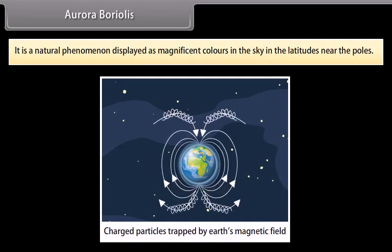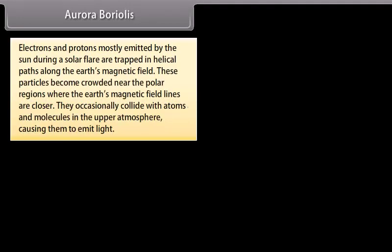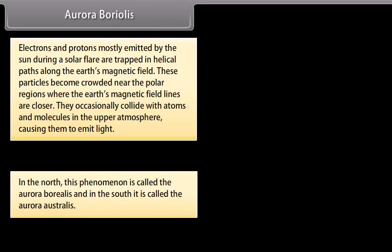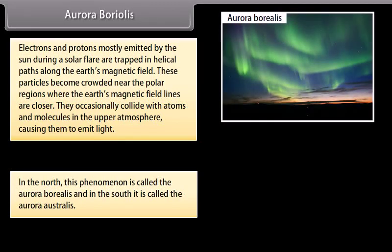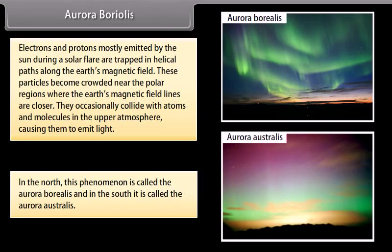Aurora Borealis. It is a natural phenomenon displayed as magnificent colors in the sky at latitudes near the poles. Electrons and protons mostly emitted by the sun during a solar flare are trapped in helical paths along the earth's magnetic field. These particles become crowded near the polar regions where the earth's magnetic field lines are closer, and occasionally collide with atoms and molecules in the upper atmosphere causing them to emit light. In the north, this phenomenon is called the Aurora Borealis, and in the south, it is called the Aurora Australis.